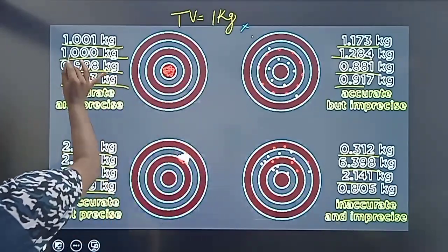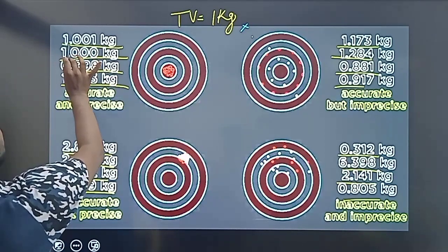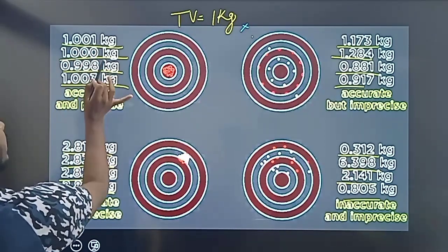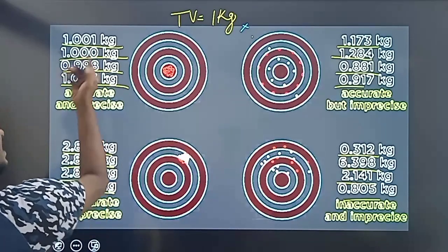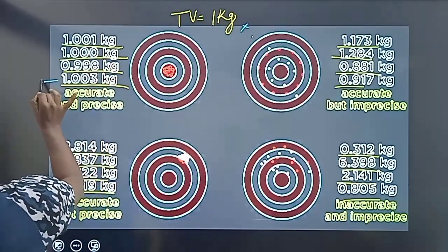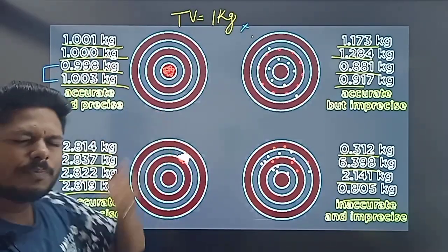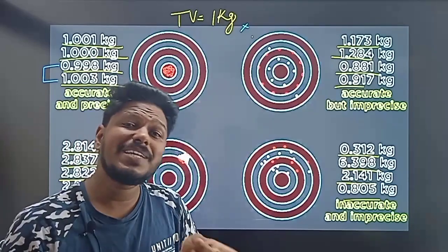Now let's see. These values: 1.001, 1.000, 0.998, 1.003. If you look at these, the values are very close together. Where are the same values? Then it is precise.